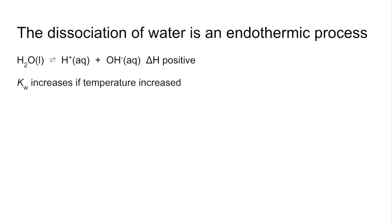So if you increase the temperature, that's going to favor the forward reaction because it's endothermic. So KW is going to increase because there's more dissociation. The knock-on effect of that is the hydrogen ion concentration will increase and therefore the pH will decrease.